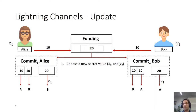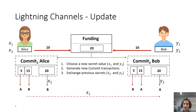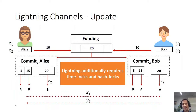For an update, parties choose two new secrets x2 and y2 and generate a new commit transaction with updated payout and punishment conditions—now Bob needs x2 to punish Alice if she publishes commit two. They then exchange the previous secrets x1 and y1, so if Alice publishes commit one, Bob can punish her. I want to point out this was a simplified explanation; in practice Lightning actually needs time locks and hash locks.